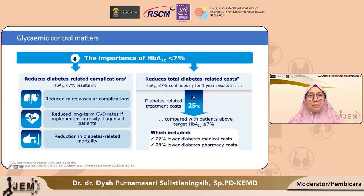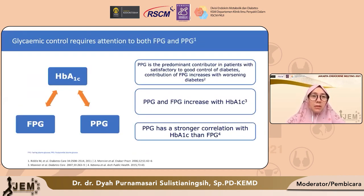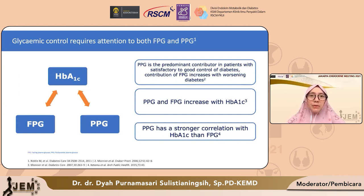Pada pengelolaan diabetes mellitus tipe 2, pencapaian HbA1c menjadi salah satu faktor yang penting karena terkait dengan pencegahan terjadinya komplikasi mikrovaskuler maupun makrovaskuler, dan juga terkait dengan penurunan biaya akibat komplikasi diabetes. Untuk mencapai target glikemik yang optimal, parameter kita adalah HbA1c, yang dipengaruhi oleh baik gula darah puasa maupun gula darah postprandial.